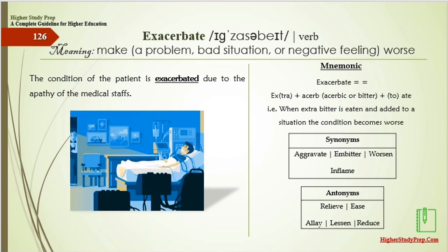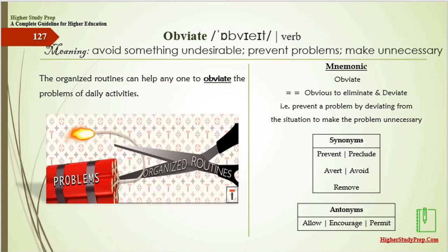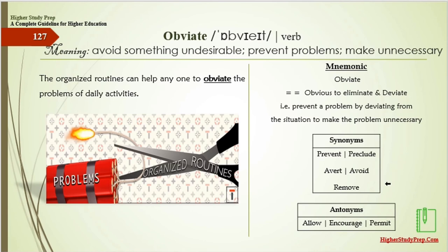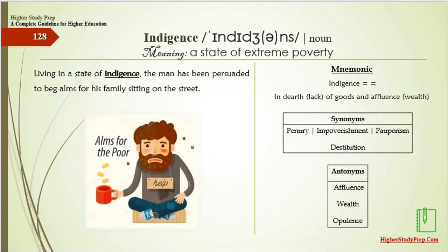Obviate means to avoid something undesirable, or to prevent problems, or make something unnecessary. An organized routine can help anyone obviate the problems of daily activities. Mnemonic: obviate — obvious to eliminate and deviate, that is prevent a problem by deviating from the situation to make it unnecessary. Synonyms are prevent, preclude, avoid, or remove. Antonyms are allow, encourage, or permit.